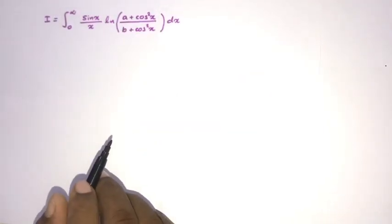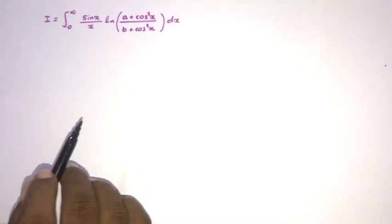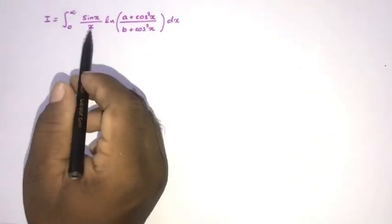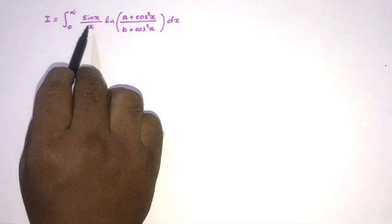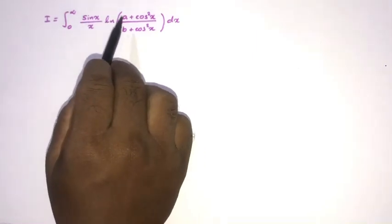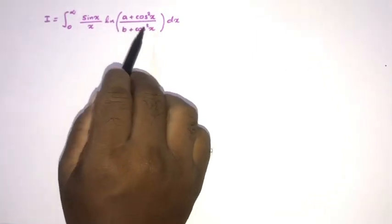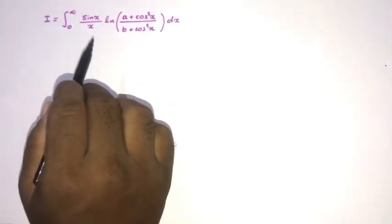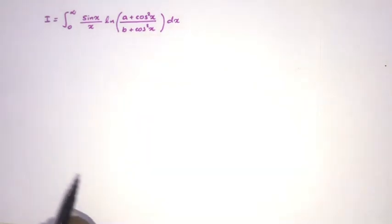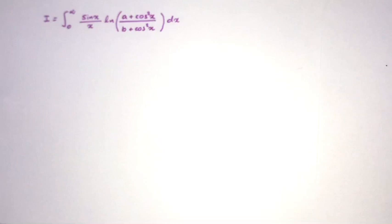Hello everyone, welcome to the Mathematics My channel. In this video we are going to solve this interesting integral: the integral from zero to infinity of sine of x over x times the natural log of (a plus cosine squared of x) over (b plus cosine squared of x) dx. At first glance, I remember the Lobachevsky integral formula.